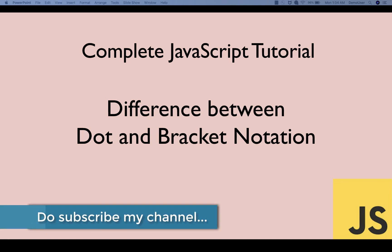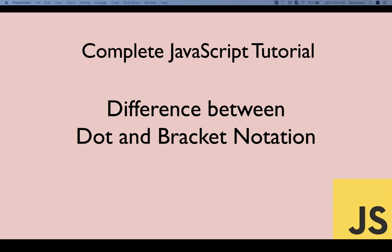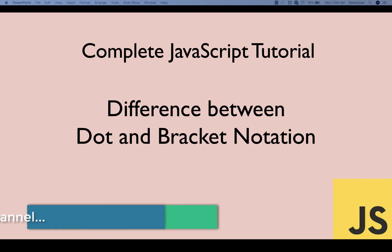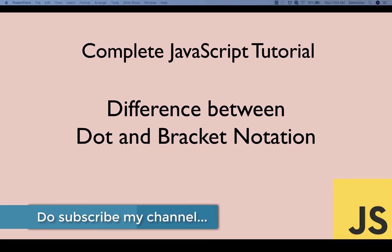Hello everyone, welcome back. Previously we talked about objects in JavaScript, and we also slightly covered what exactly dot notation is, or how to use a dot operator to get details from a particular object — that is, a property value. In this video we'll cover the difference between dot and bracket notation, as there is one more thing called bracket notation which can be used to get details from a particular object, similar to dot, but there is a slight difference between both of them.